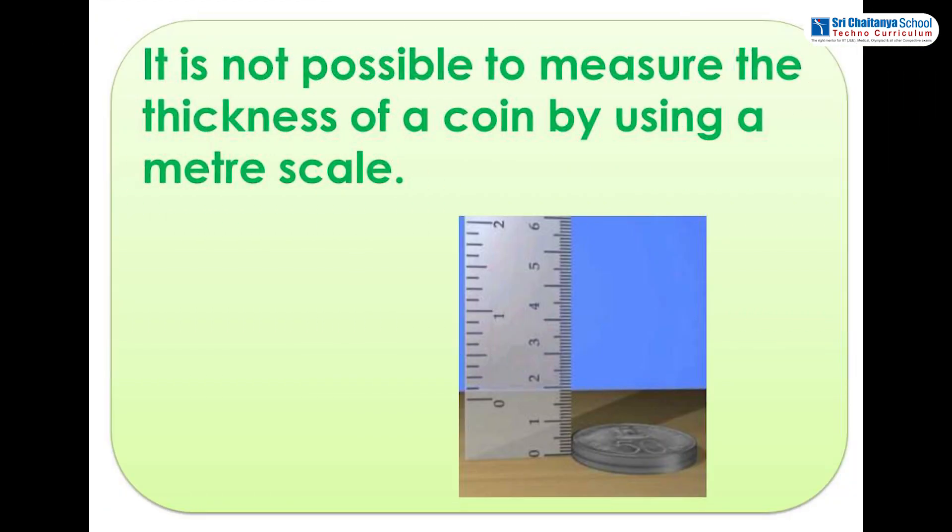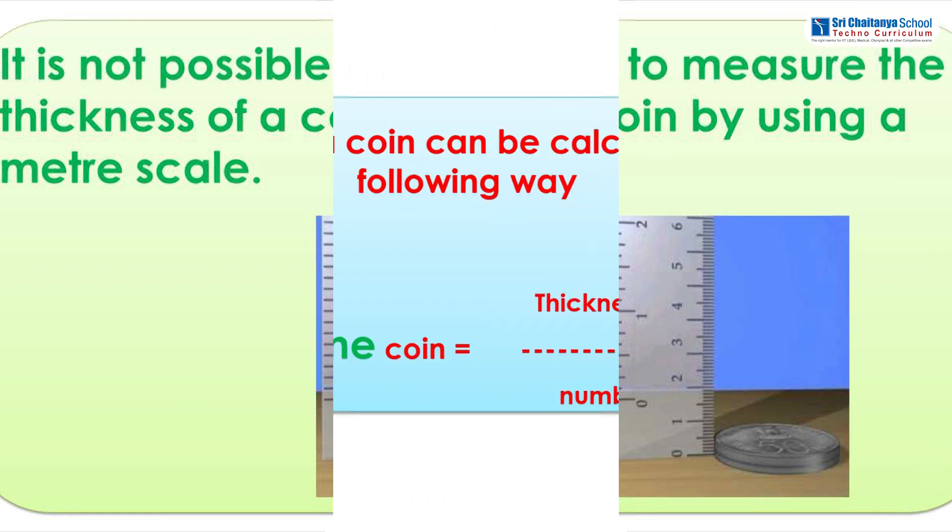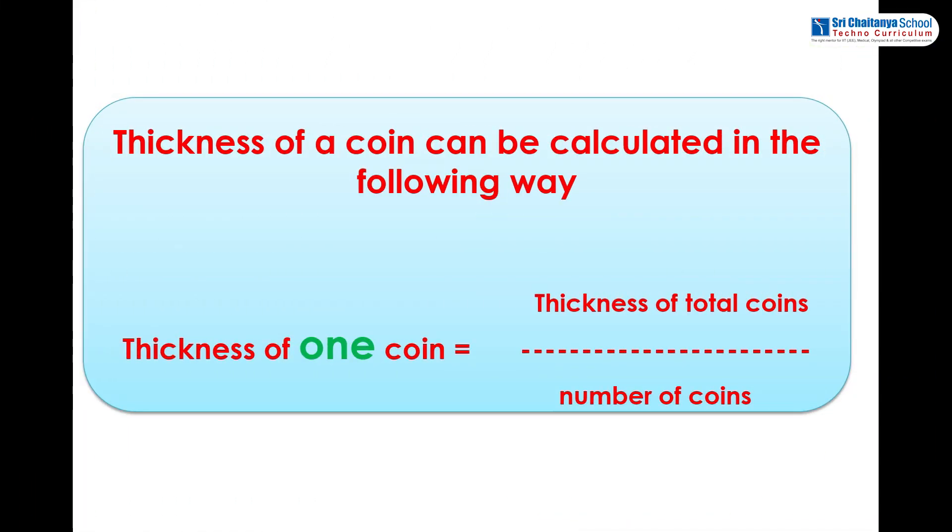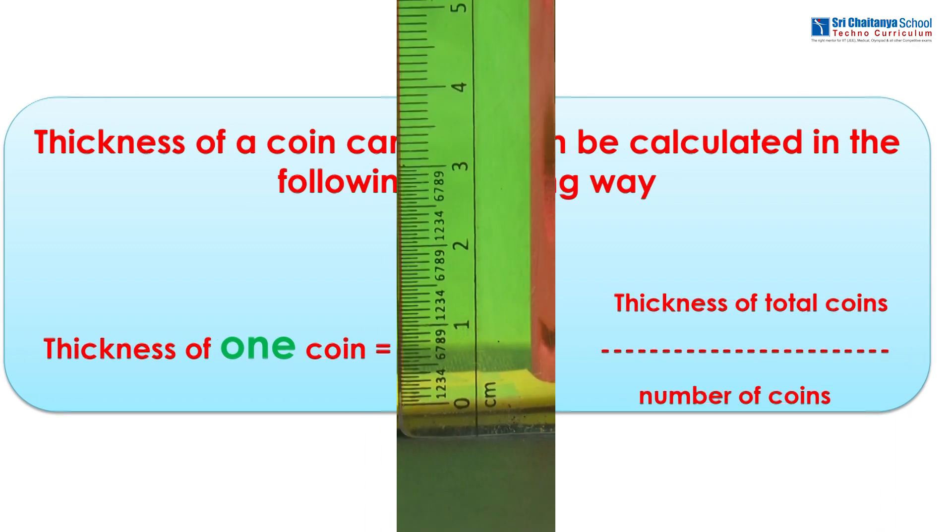Dear students, it is not easy to measure the thickness of a coin with a scale. So we measure the thickness of few coins and from that we can calculate the thickness of one coin. Thickness of one coin equals thickness of total coins divided by number of coins.